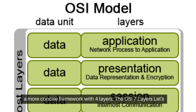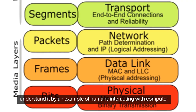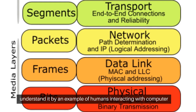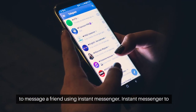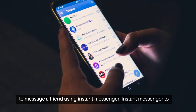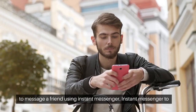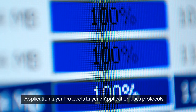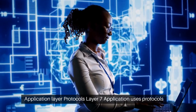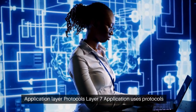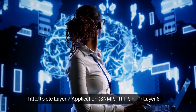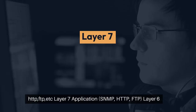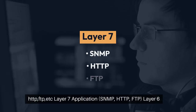The OSI seven layers — let's understand it by an example of humans interacting with a computer to message a friend using Instant Messenger. Instant Messenger to chat is an application that uses network services. Layer 7 is the application layer, which uses protocols such as HTTP, FTP, SNMP, and others.